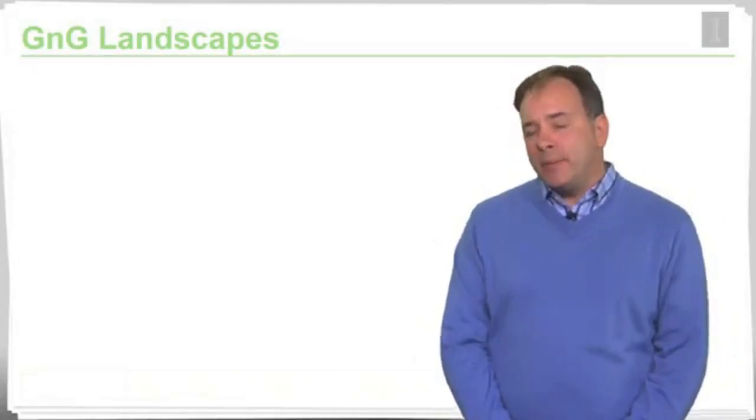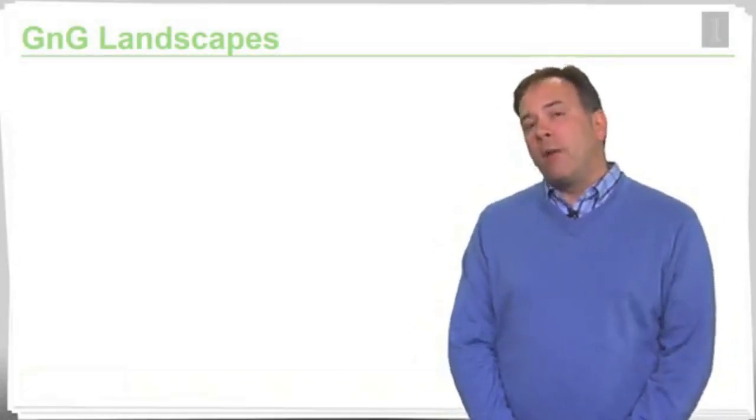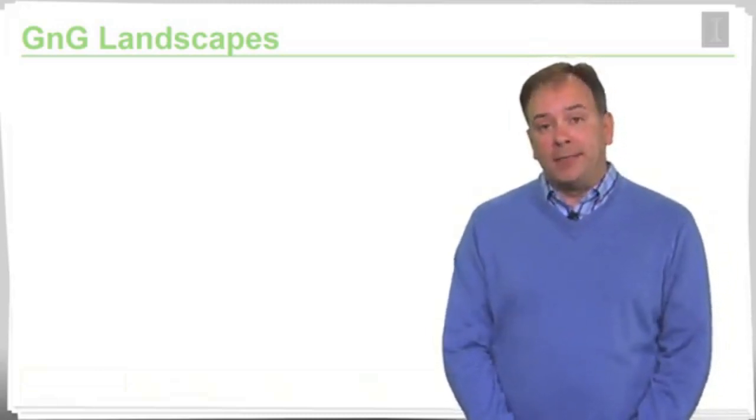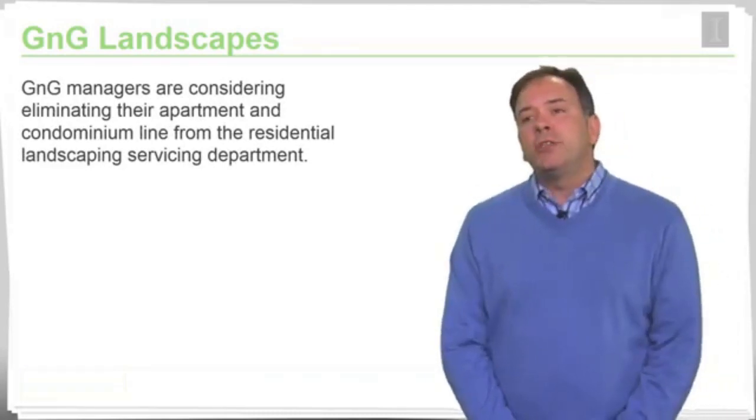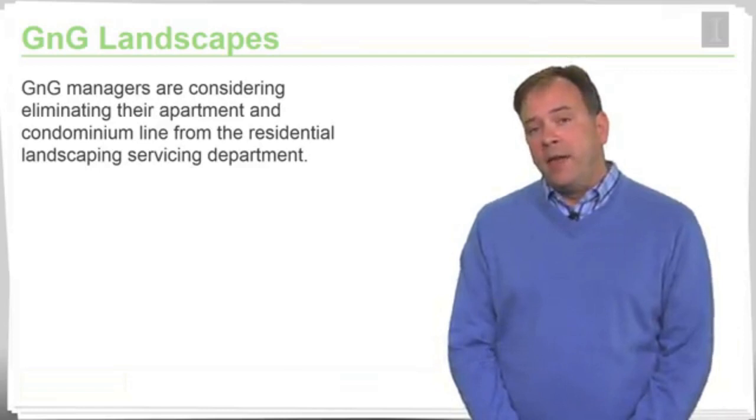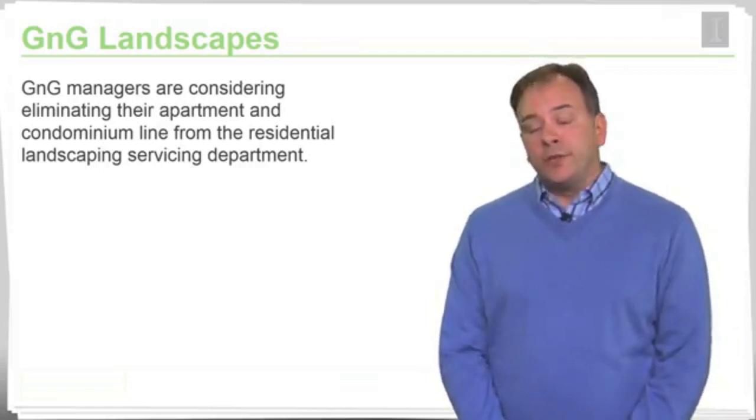Let's continue our application process via the G&G landscape setting and look at a different operational decision, in particular, managing its product lines. G&G managers are considering eliminating their apartment and condominium line from the Residential Landscaping Service Department.